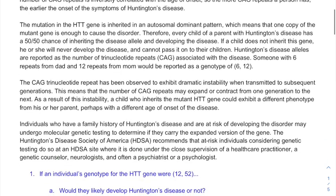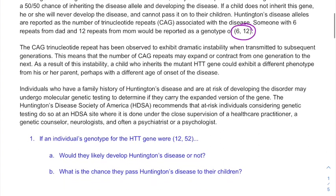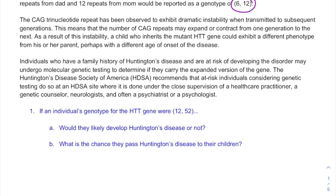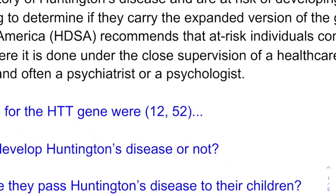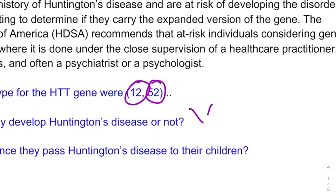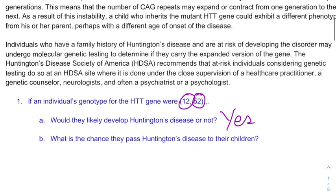When we talk about the genotype of this disorder, it's usually written as a number comma a number, like 6 CAG repeats or 12 CAG repeats and so on. For example, if an individual's genotype were 12 comma 52, the 12 would not provide enough CAG repeats for Huntington's, but the 52 would. You don't add them together; you take them each individually. So 52 is more than 35, meaning this person would have Huntington's if they lived long enough to develop the disorder.